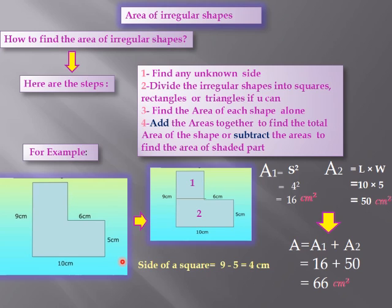Now we are going to calculate the area of irregular shapes. How to find the area of irregular shapes? We have several steps. First, find any unknown side. Second, divide the irregular shape into squares, rectangles, or triangles if you can. Third, find the area of each shape alone. Fourth, add the areas together to find the total area of the shape, or subtract the areas to find the area of the shaded part.